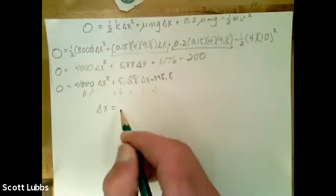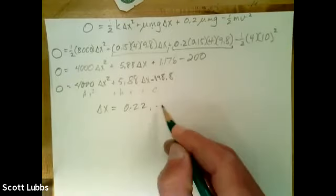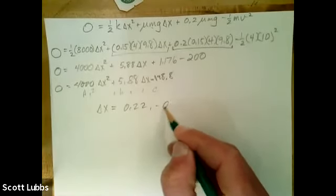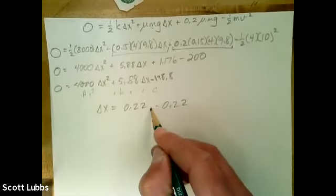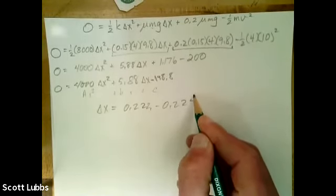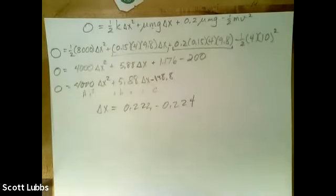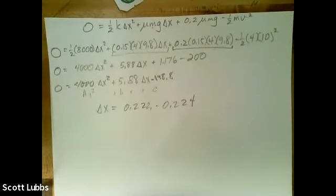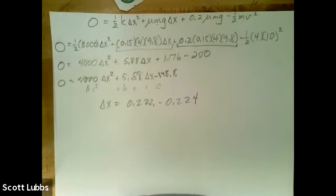Delta x is 0.22 and negative 0.22, not a whole lot of difference there. 0.22 and 0.224. So what are those? Now we have to figure out what those answers mean.